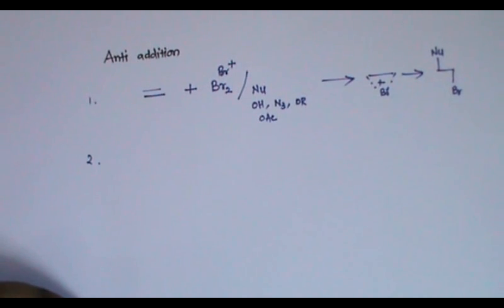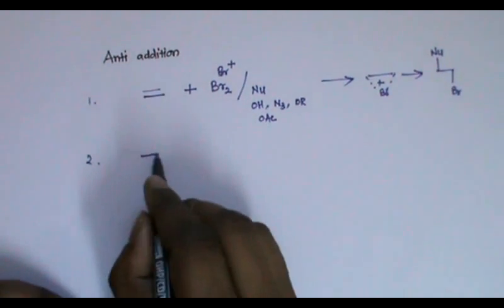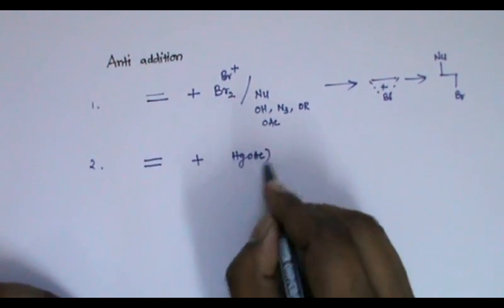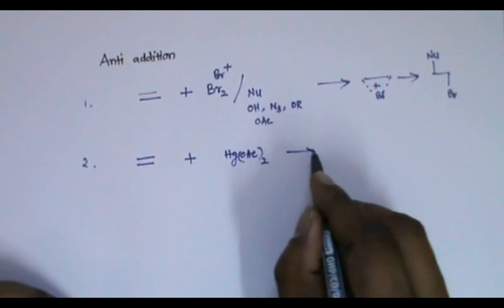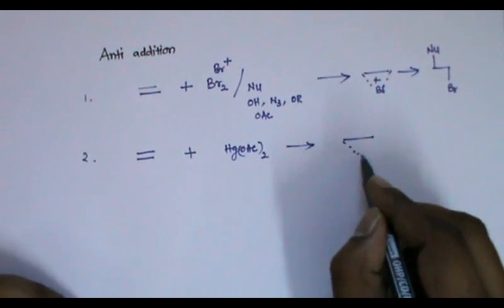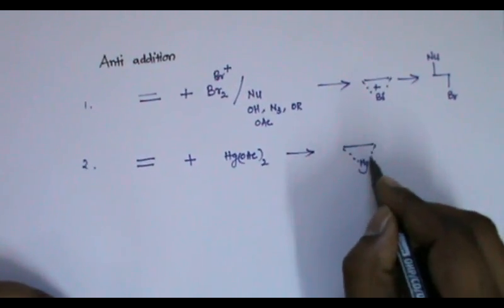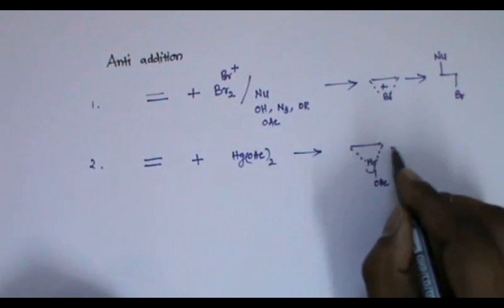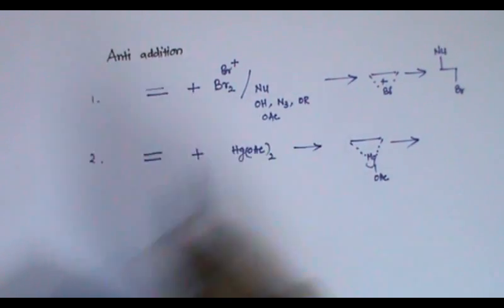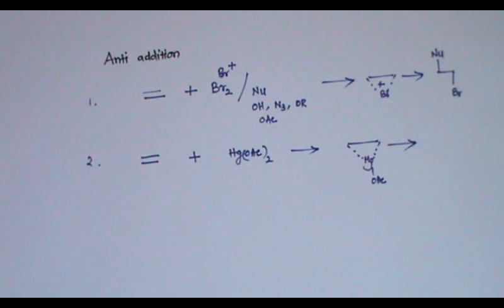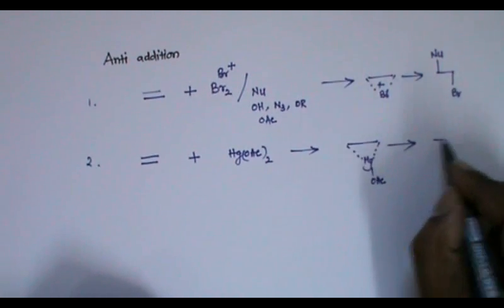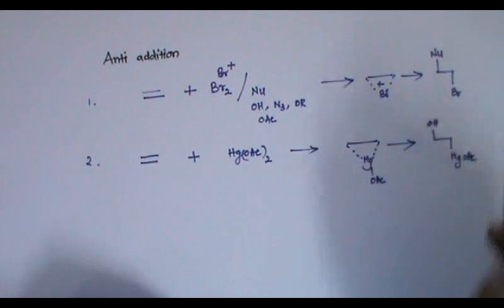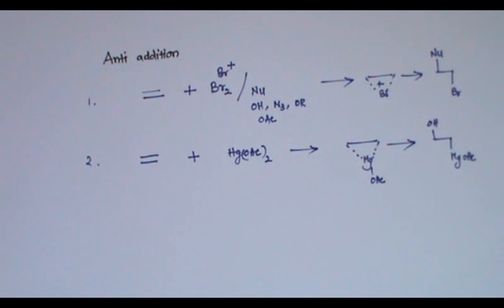The second anti addition reaction is hydroxymercuration. When I add Hg(OAc)2 to an alkene, I get a similar intermediate. The nucleophile may be water, azide, OR, or OAcetate — generally we use water. The water opens up to give the anti addition product, which is the trans product.